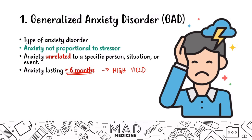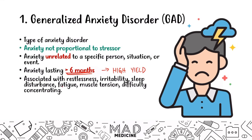Patients who suffer from GAD are going to feel restless, irritable, they're going to have sleep disturbances, feel tired, have muscle tension, and generally struggle to concentrate. Those are pretty general, non-specific symptoms. Think back to how anxiety felt and how it restricted you from being productive, then spread that out for six months — that'll give you a good understanding of the symptomology of this disorder.